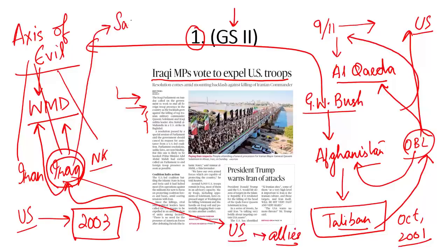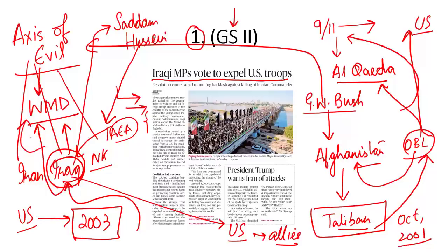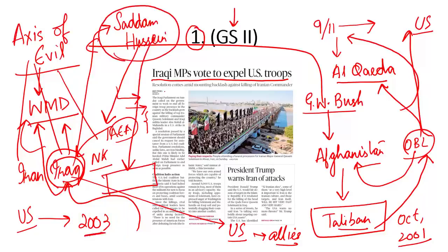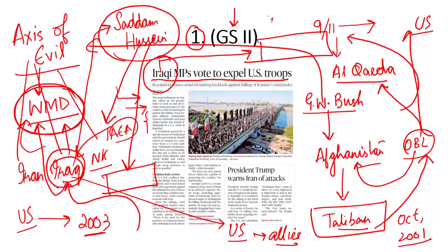Iraq was then ruled by a dictator, Saddam Hussein. Even before the Iraq war, Saddam Hussein had allowed international agencies such as the IAEA to visit Iraq and check whether Iraq was in possession of weapons of mass destruction. No conclusive evidence was found. But nevertheless, the US and her allies went ahead and launched the war. Saddam Hussein's government was dethroned, he was captured alive and hanged. After the war was over, no weapons of mass destruction were found in Iraq. The war transformed Iraq from a stable country into a den of instability.